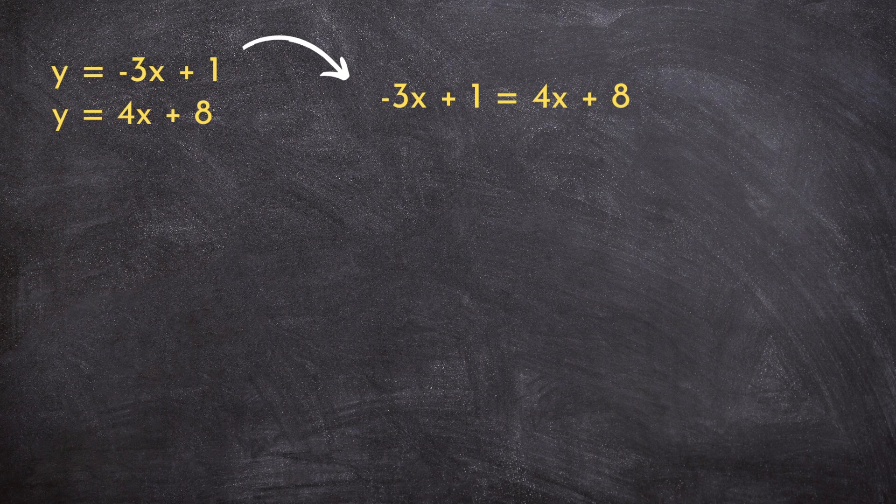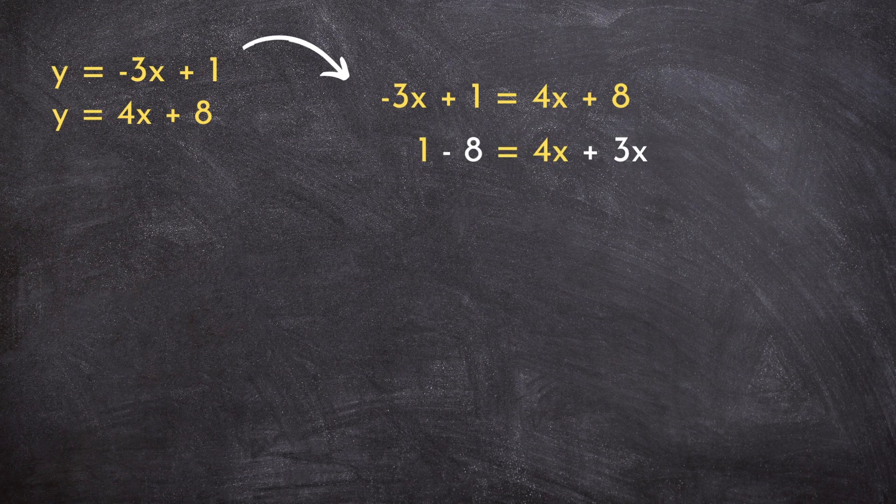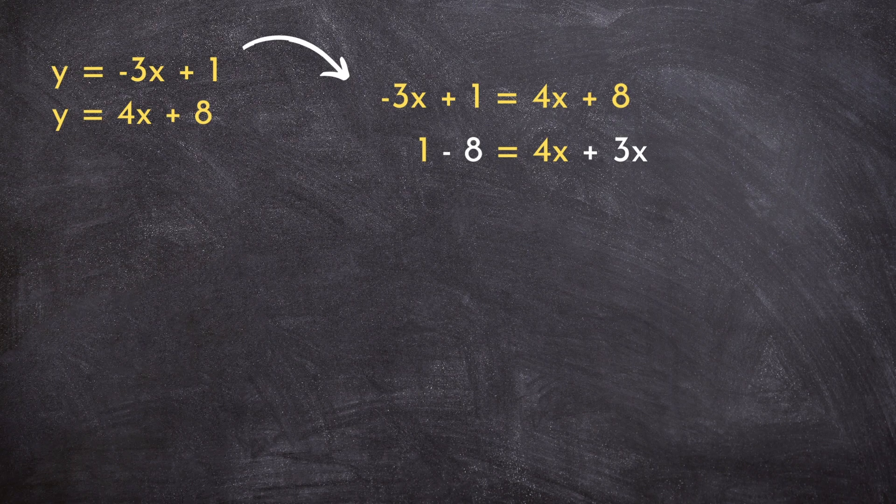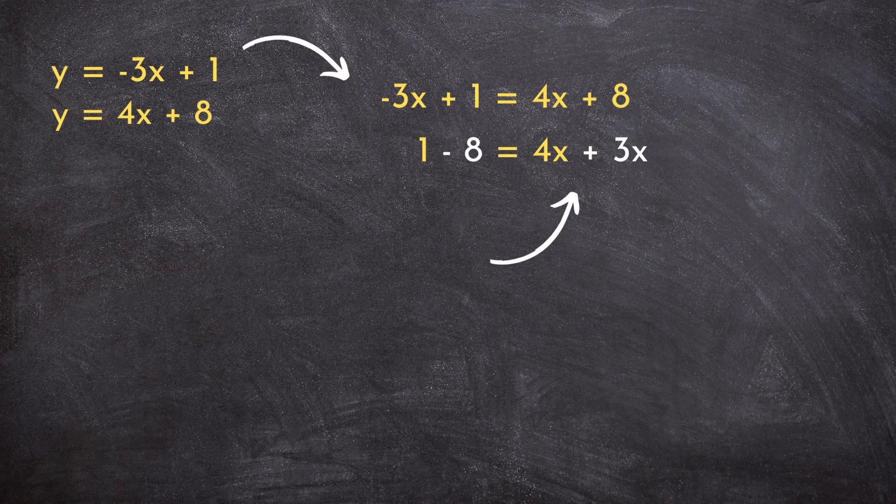As usual, we can apply some fancy algebra to collect our x terms on the right side of the equation just by adding 3x over to the other side.